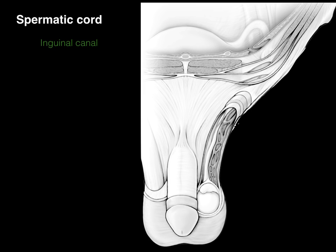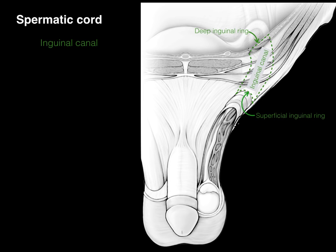Here's an anterior view of the inguinal region. The inguinal canal is the canal that connects the testis with the abdominal wall — shown in green. The outside opening is called the superficial inguinal ring, and the inside opening is called the deep inguinal ring. The inguinal canal connects those two rings, and that's what the testis descended through. The boundaries of the inguinal canal are formed by the layers of the abdominal wall.